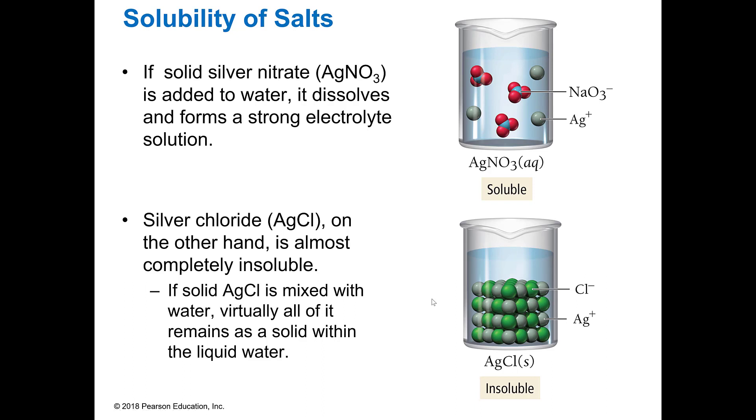If you have a solid silver nitrate and you put it in water, it will dissolve and form a strong electrolyte like we would imagine. But when you put silver chloride in there, it doesn't dissolve. I mean like nothing. You're not seeing anything. And so it stays as a solid. It will not, you can mix it and stir it, whatever you want to do. But it is not going to disappear. It is going to stay as a solid in there. And so it is considered to be insoluble.